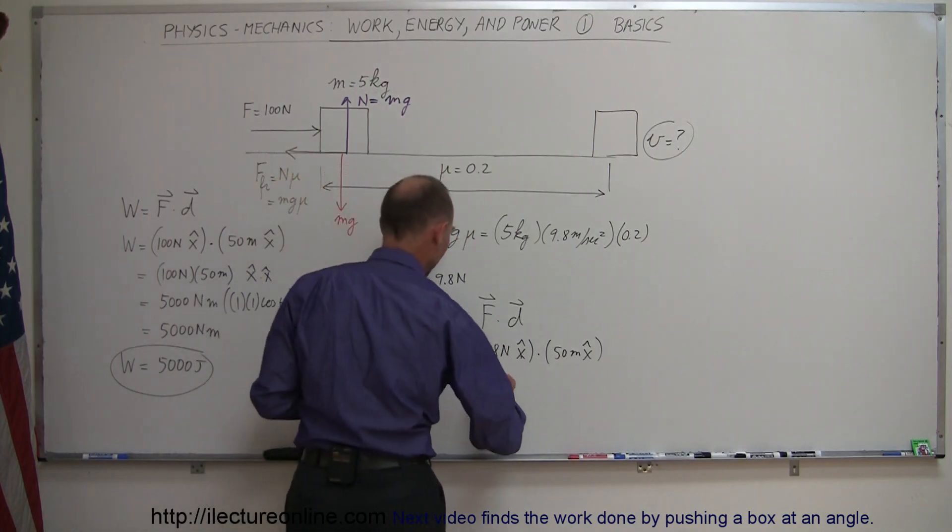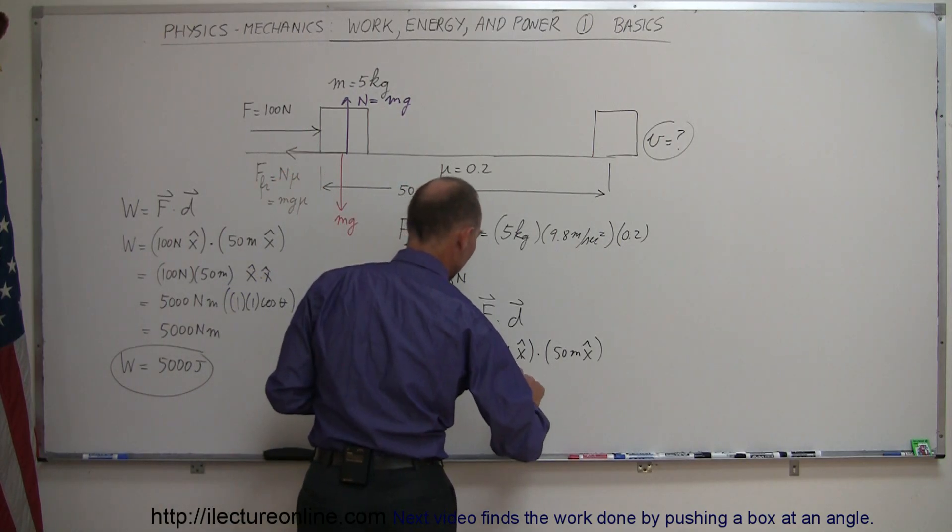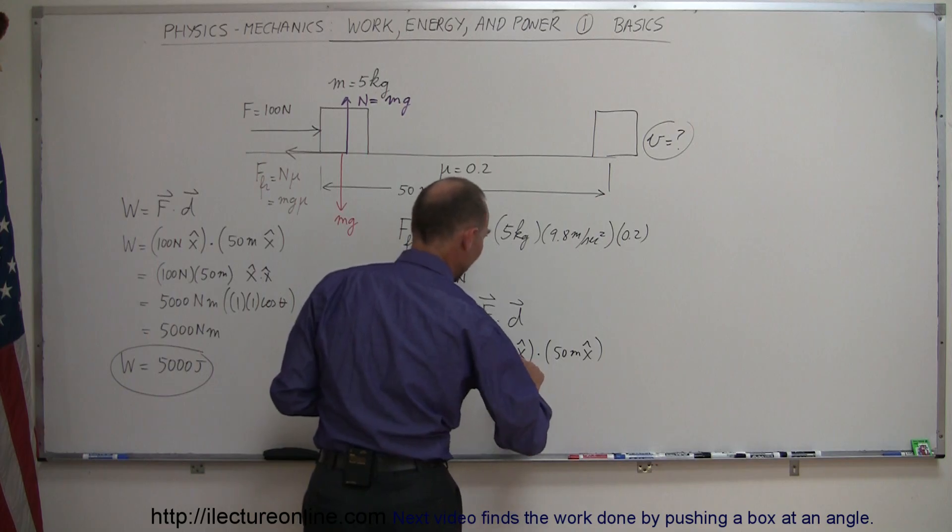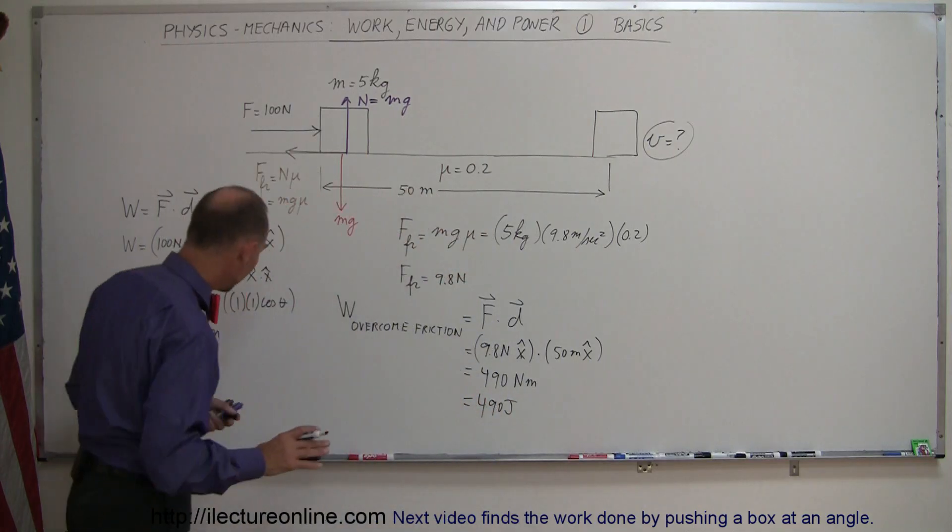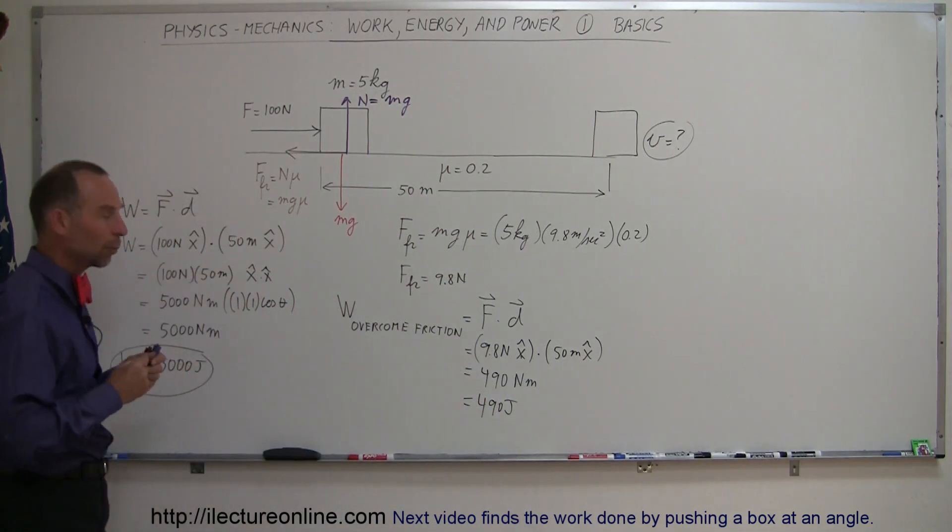So this will be equal to 50 times that, so that would be 490 newton meters x dot x, which is 1, and so this will equal to 490 joules.